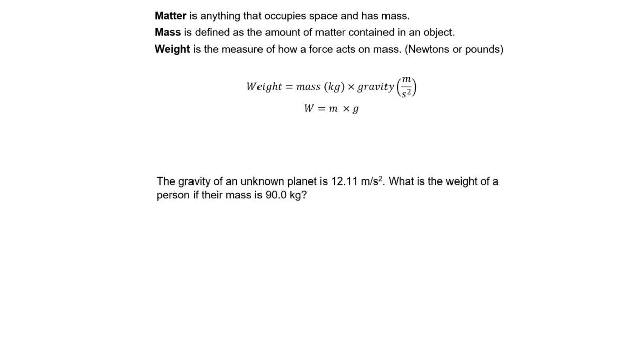Let's do a problem. The gravity of an unknown planet is 12.11 meters per second squared. What is the weight of a person if their mass is 90 kilograms?